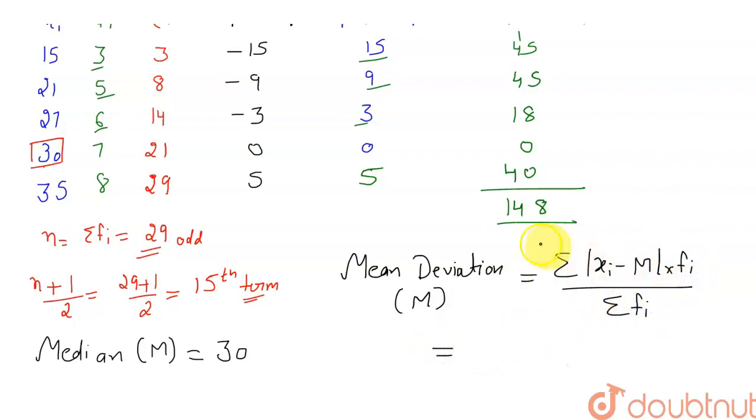So this will be equal to 148, and sigma of f_i we have found to be 29. And 148 divided by 29 approximately equal to 5.10. So that will be my answer. So if you understand.